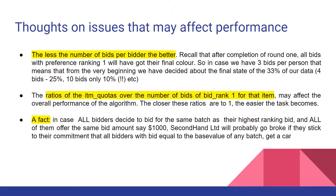The first point is quite straightforward: the fewer the number of beads per bidder, the better — you can see the justification for that. Another point that may affect the overall performance of the algorithm is the ratios of the item quotas over the number of beads of bid rank one for that item. We think the closer these ratios are to one, the easier the task becomes.